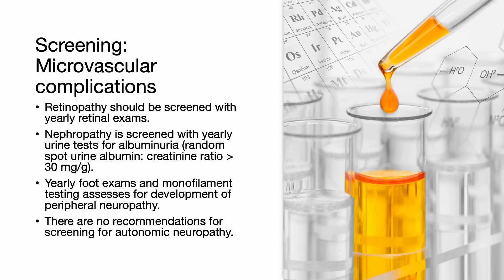Screening for microvascular complications is important. Retinopathy should be screened with yearly retinal exams. Nephropathy is screened with yearly urine tests for albuminuria by ordering a random spot urine albumin-to-creatinine ratio, with a value of more than 30 being significant. Yearly foot exams and monofilament tests are important to assess for peripheral neuropathy, and there are no recommendations for screening for autonomic neuropathy.